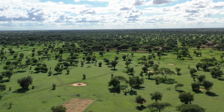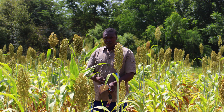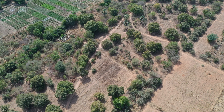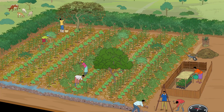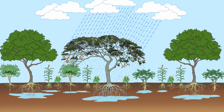L'intégration d'arbres et de buissons dans les champs agricoles s'appelle l'agroforesterie. L'agroforesterie est bénéfique pour de nombreuses raisons. Permettez-nous de vous présenter quelques-uns des avantages de l'intégration des arbres dans les champs de culture. Les arbres et les buissons peuvent augmenter la pluviométrie.